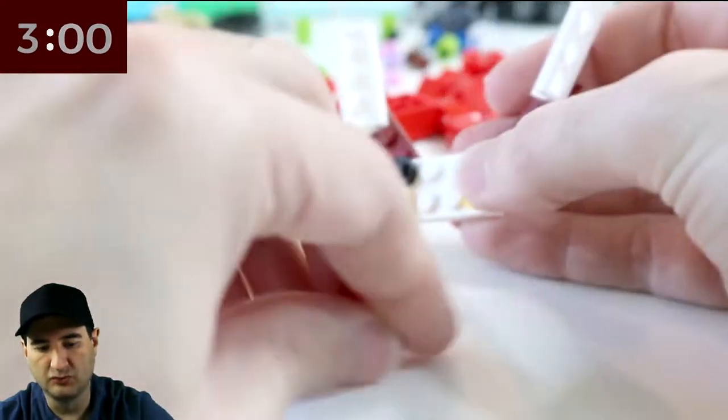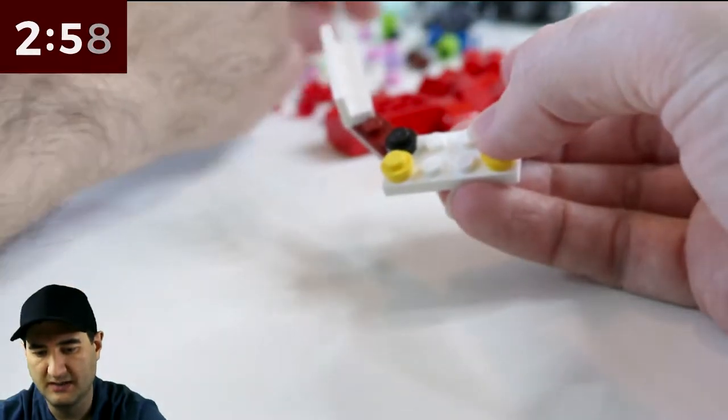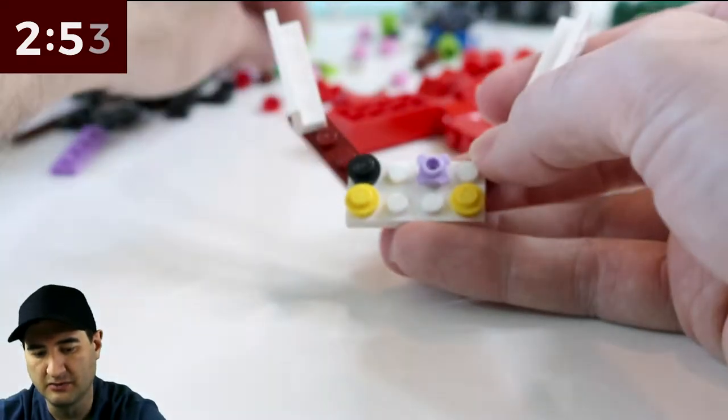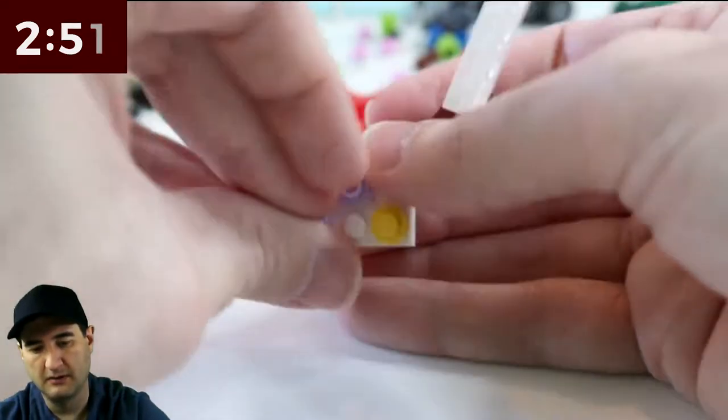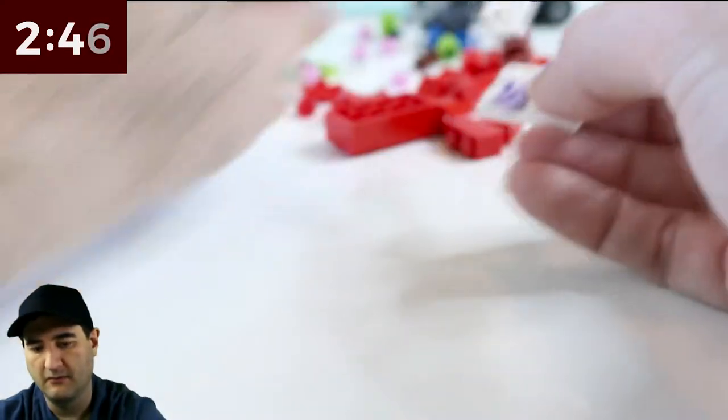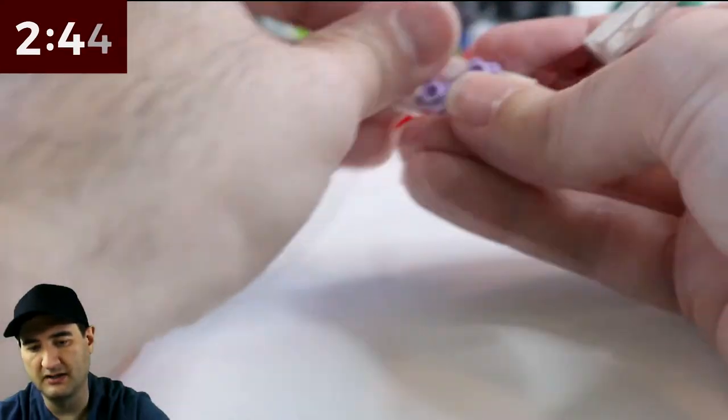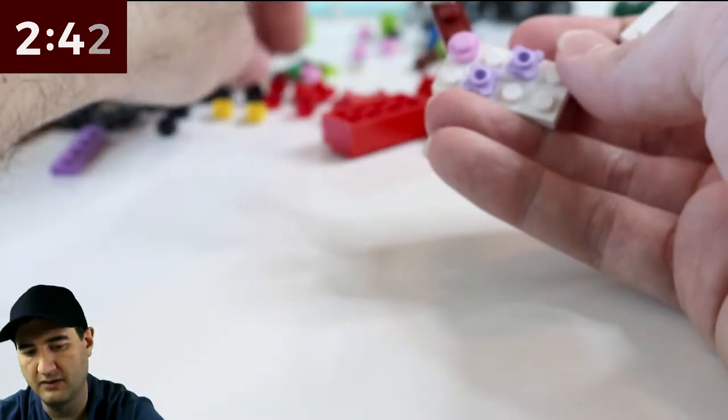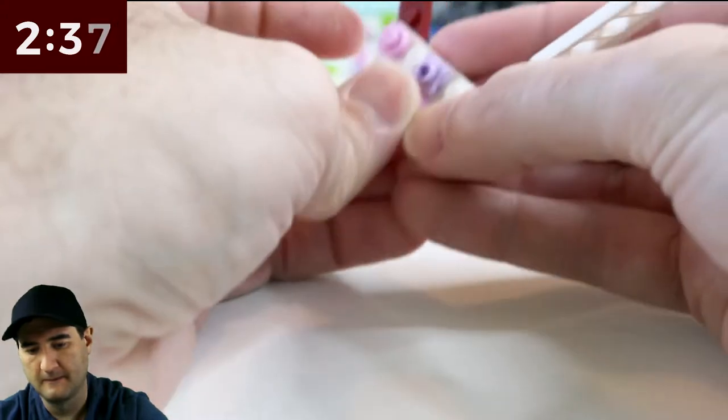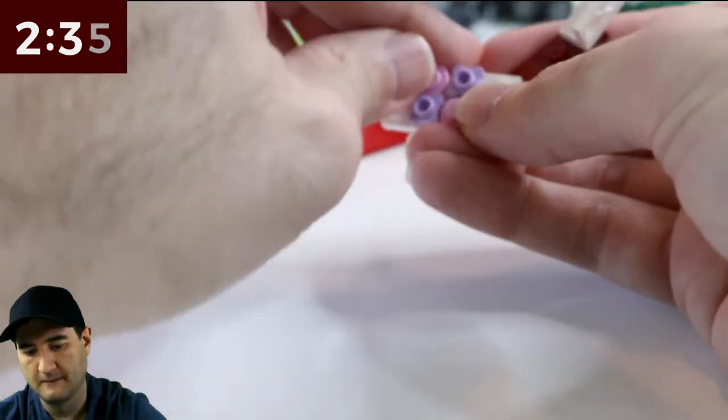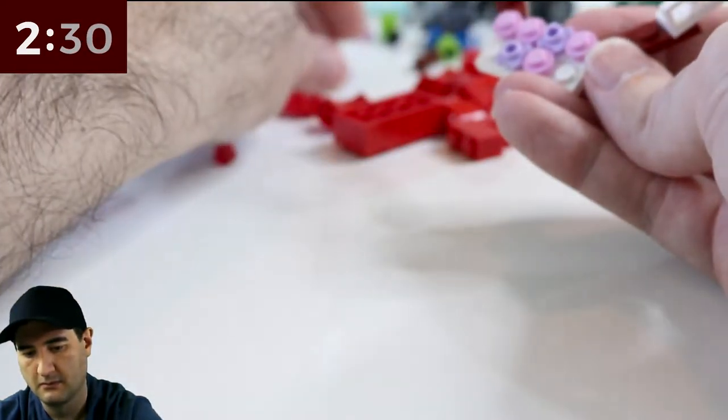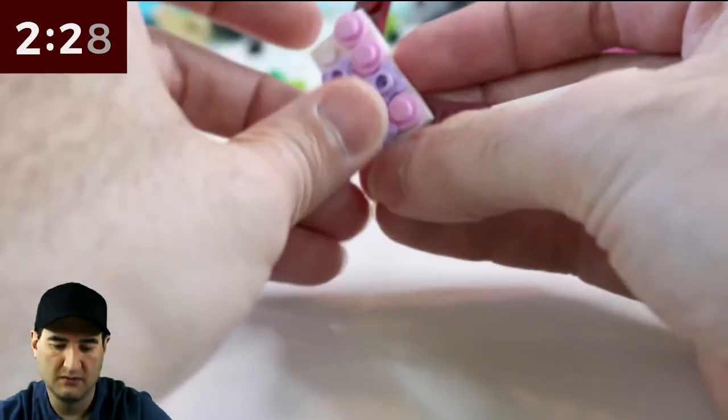So maybe instead of jewels, maybe we go with these for decoration purposes. Maybe it's like a little girl necklace. I don't know, I'm thinking out loud here. I'm trying to get an idea of what I want to build. Now we're cooking. Something like that.